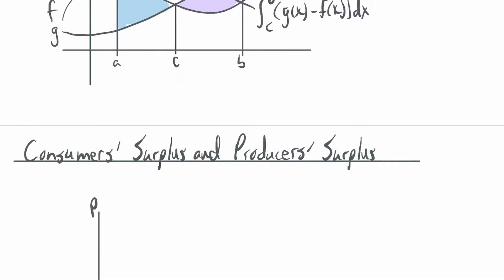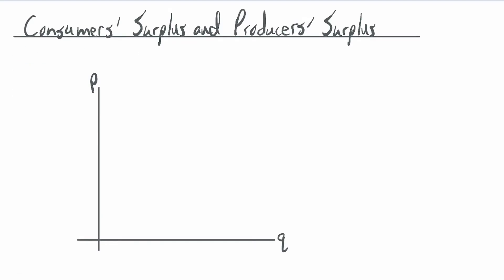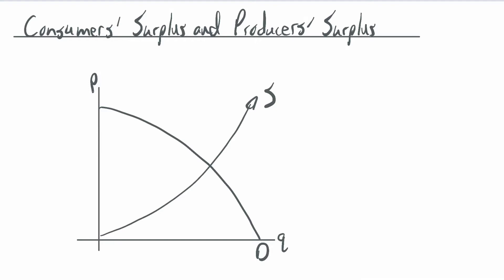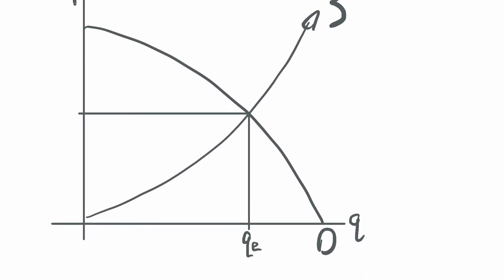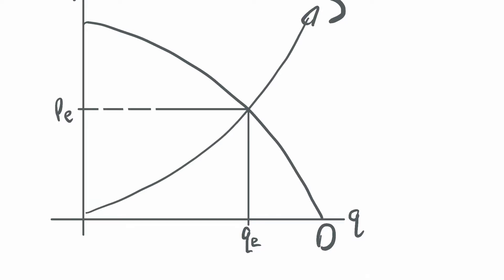This section is about applications, so we're going to look at consumer surplus and producer surplus — what those things are and how to calculate them. I have axes set up for quantity and price. I'll draw a generic supply curve and demand curve. There's a place where they intersect — that's our equilibrium quantity and equilibrium price.